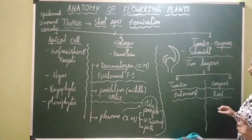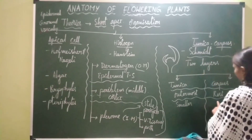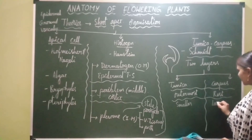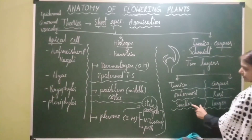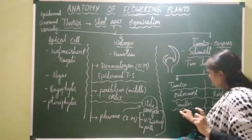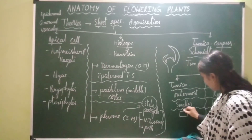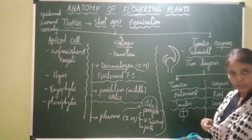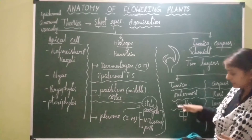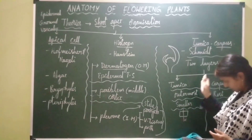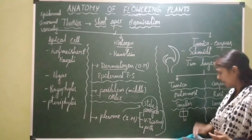The cells of the tunica are small in size, whereas the cells of the corpus are larger in size. The cells present in the tunica show anticlinal division — where cell division occurs perpendicular to the axis of the cell.